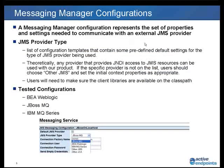A messaging manager is a grouping of communication settings used to talk to a particular instance. When you configure one, the first thing you want to decide is the type of provider. All of these providers will use a JNDI lookup to access the connection factories and the destinations used to send and receive. By selecting a provider, for a number of tested configurations we can set up defaults appropriate to that particular provider. We know what the factory properties need to be.